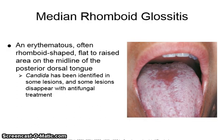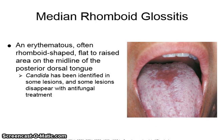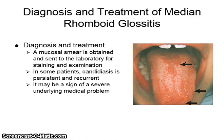Median rhomboid glossitis is an erythematous, often rhomboid-shaped, flat to raised area on the midline of the posterior dorsal tongue. Candida has been identified in some lesions, and some lesions disappear with antifungal treatment. Diagnosis and treatment involve taking a mucosal smear that is sent to the laboratory for staining and examination.